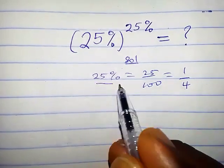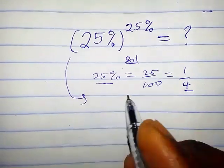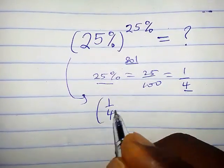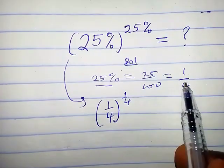So we are going to replace 25 percent with 1 over 4. From here we're going to have 1 over 4 times 1 over 4, because we replaced 25 percent with 1 over 4.